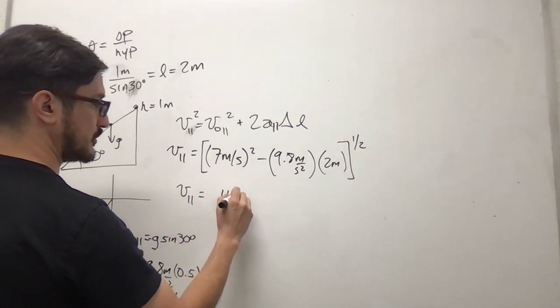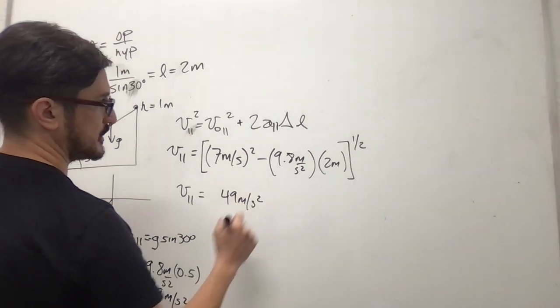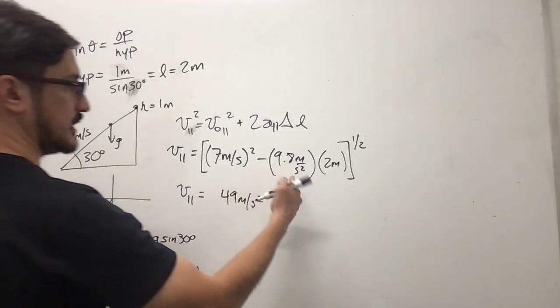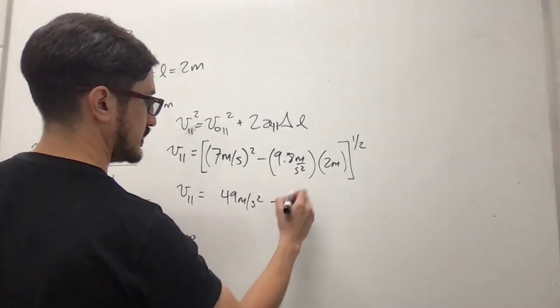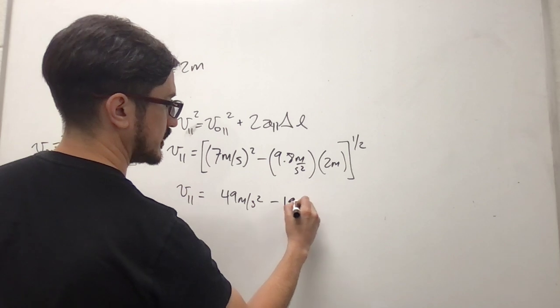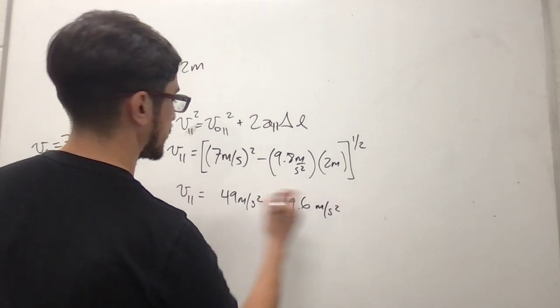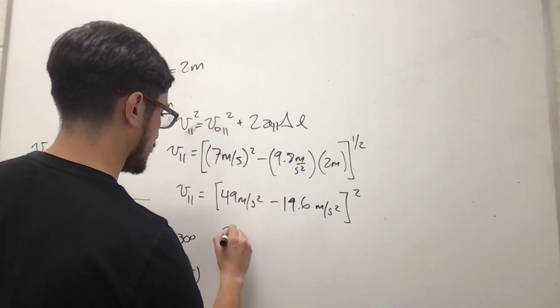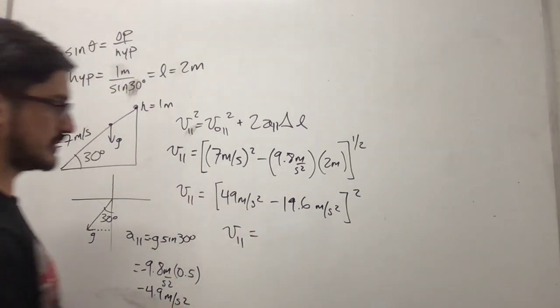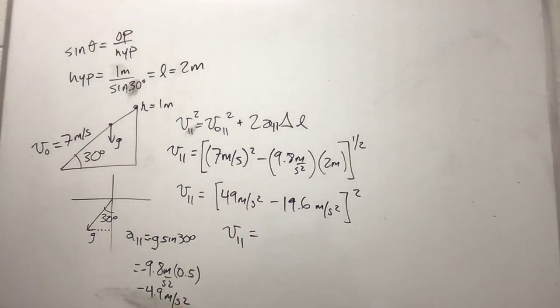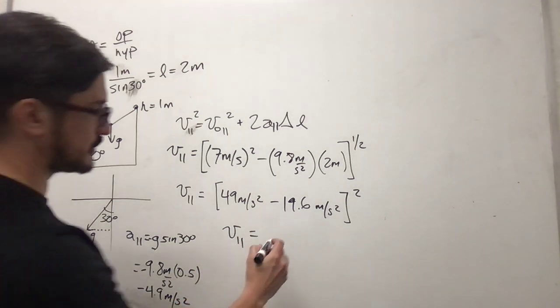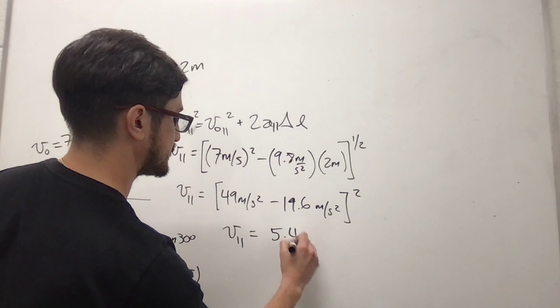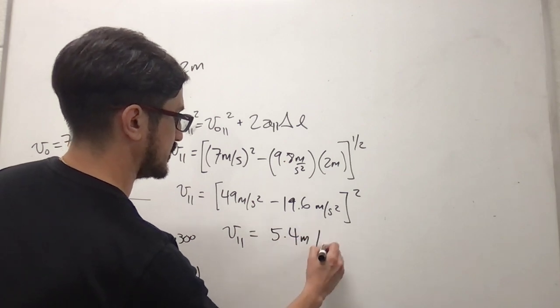So this is going to be 49 meters per second squared minus 19.6 meters per second squared. So that is going to be 5.4 meters per second.